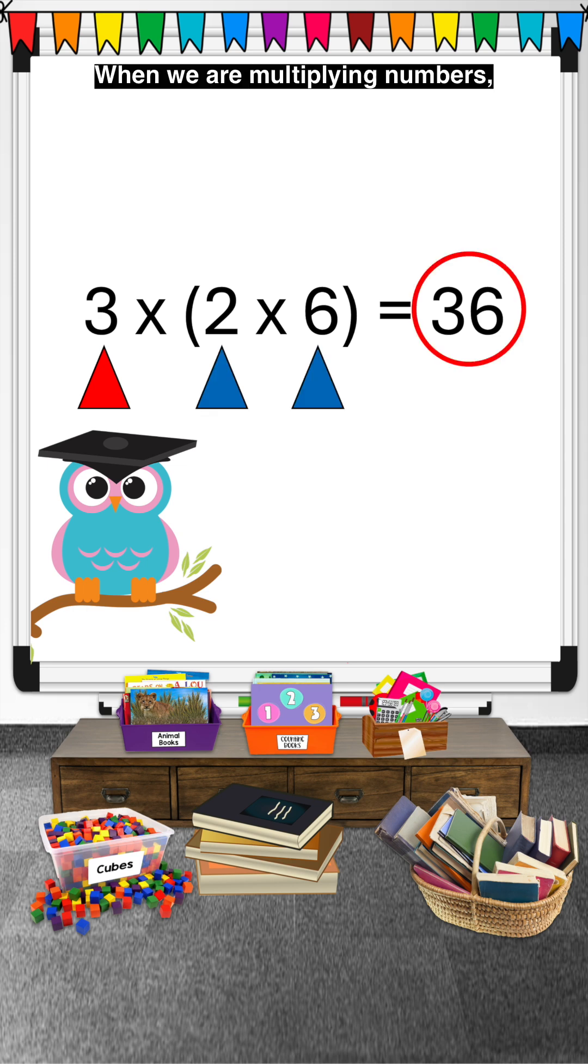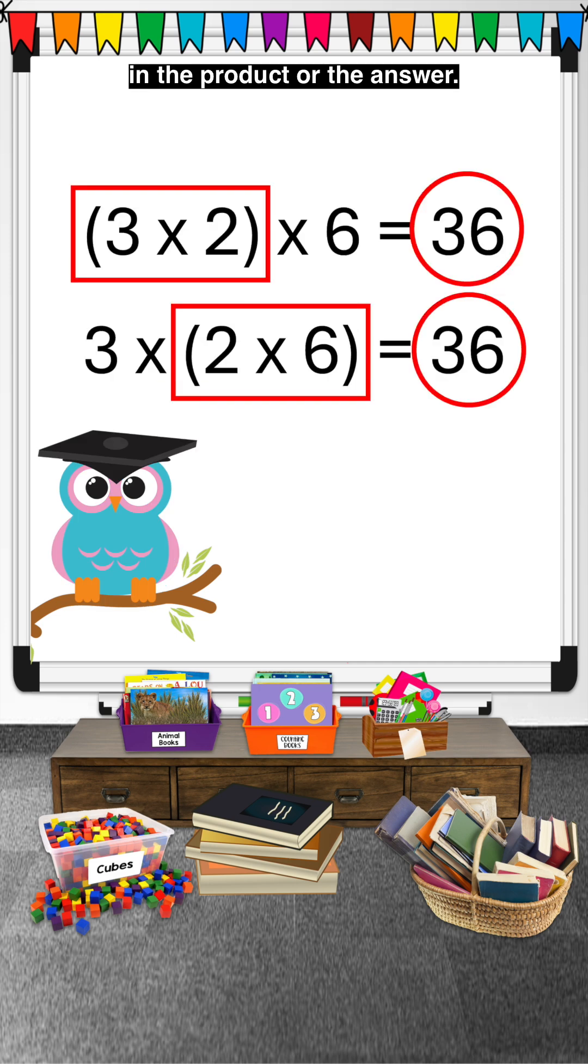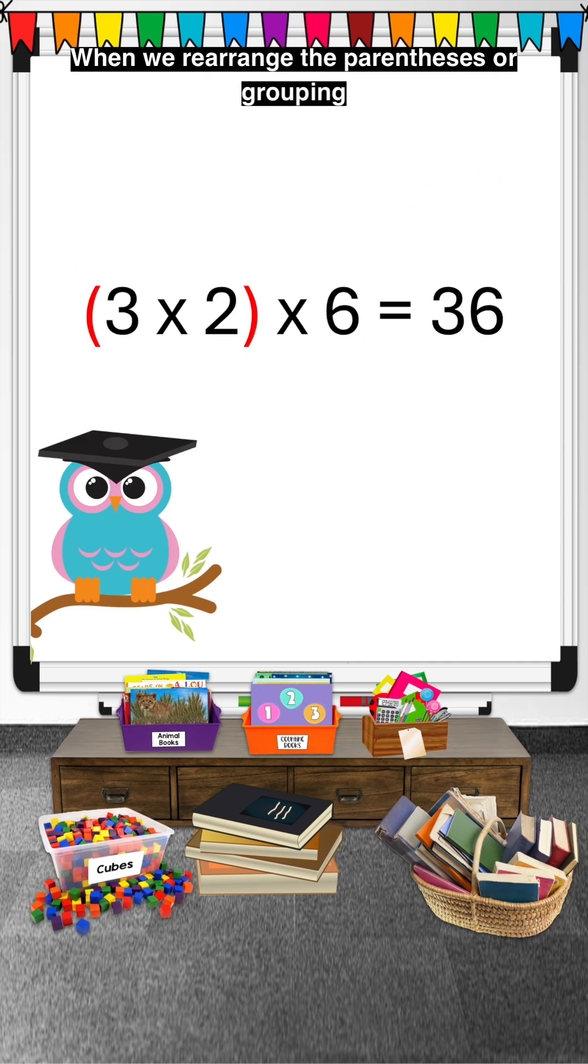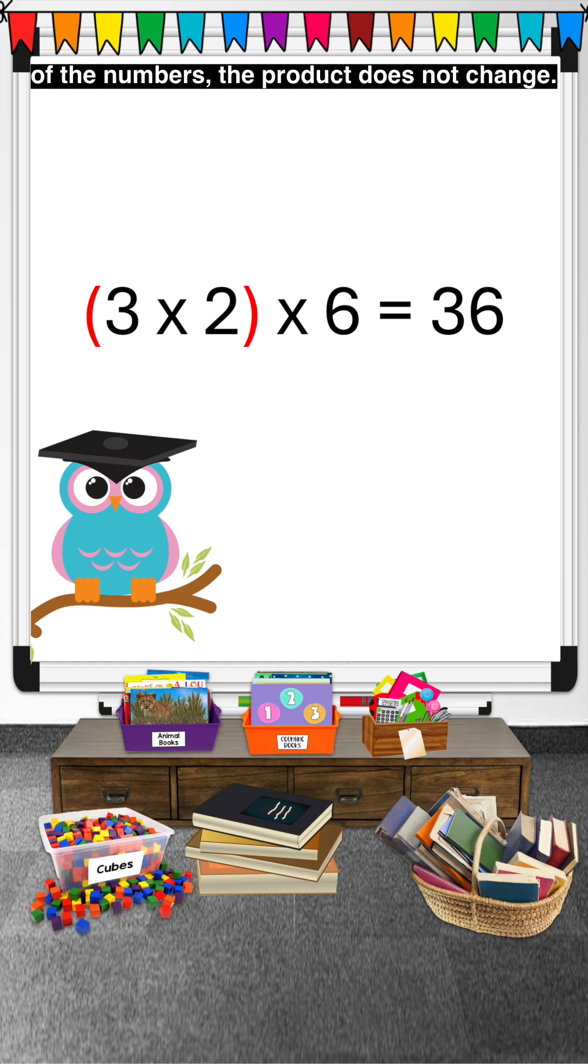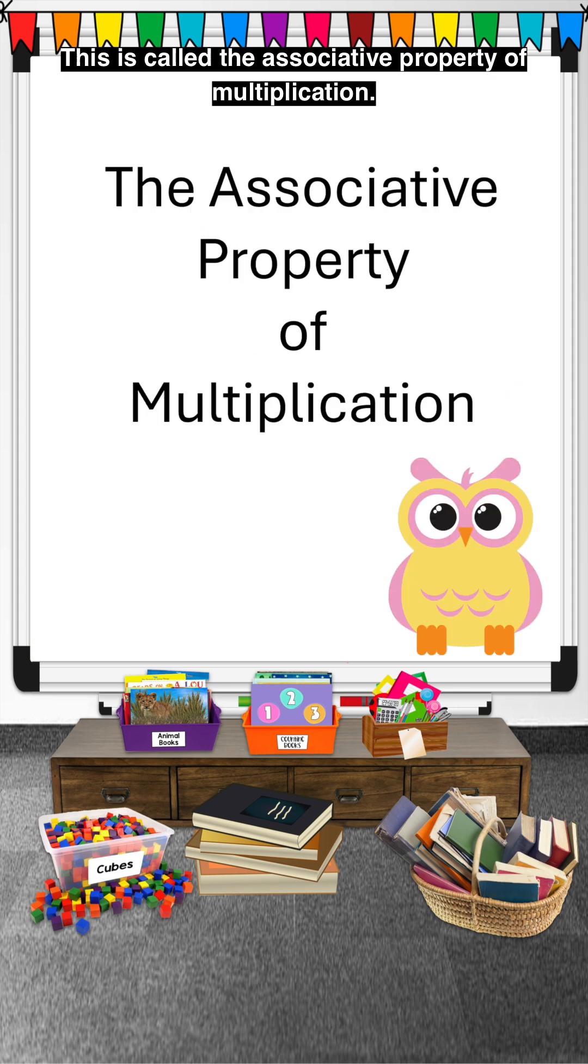When we are multiplying numbers, how we group them will not make a difference in the product or the answer. When we rearrange the parentheses or grouping of the numbers, the product does not change. This is called the associative property of multiplication.